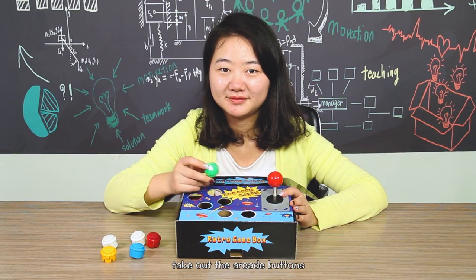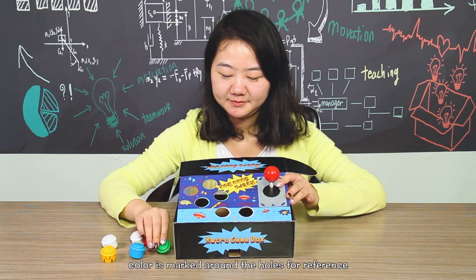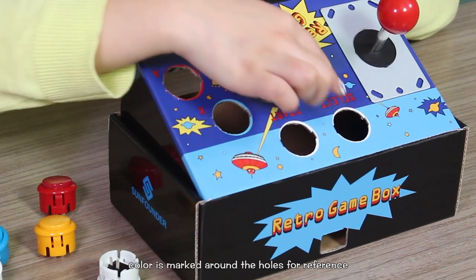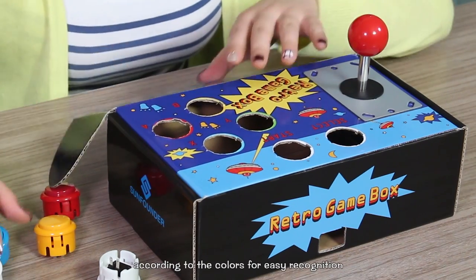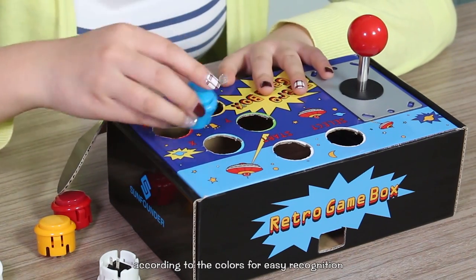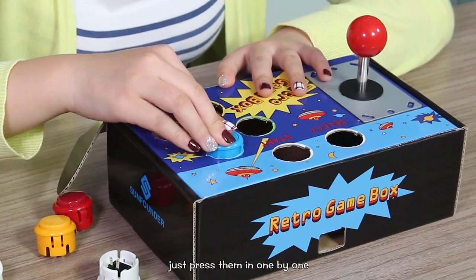Take out the arcade buttons. Color is marked around the holes for reference. You are recommended to install them according to the colors for easy recognition. Just press them in one by one.